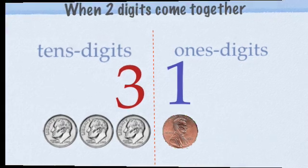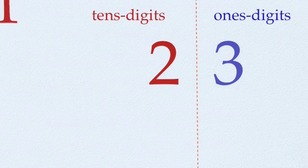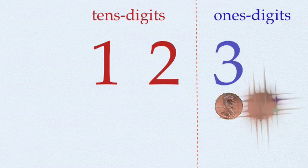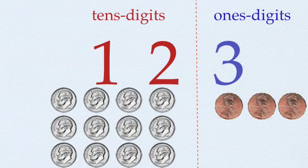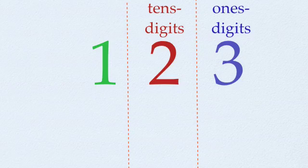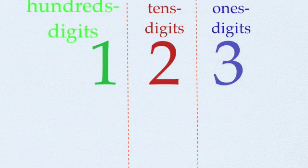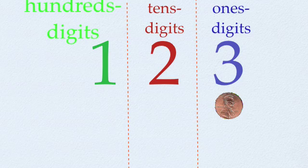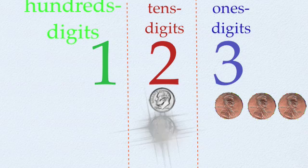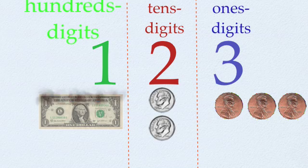Bigger numbers like one hundred twenty-three can be thought of as three pennies and twelve dimes, or as three pennies, two dimes, and one dollar which is a hundred pennies. That's the hundreds.